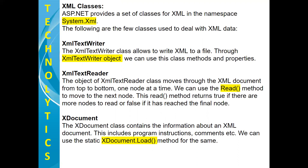The next class is XMLTextReader. After creating an object of this class, we can read an XML document from top to bottom, one node at a time. We can use the Read method to move to the next node. This Read method returns true if there are more nodes to read, and returns false if it has reached the final node.